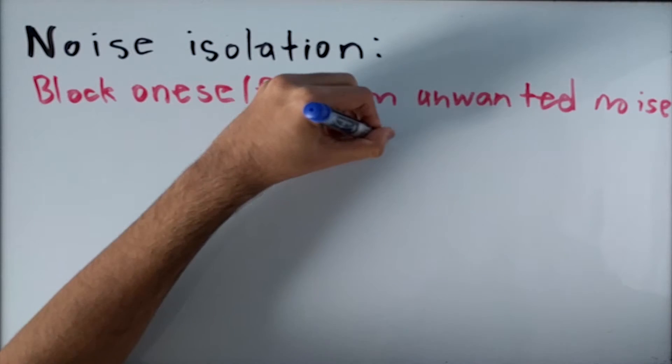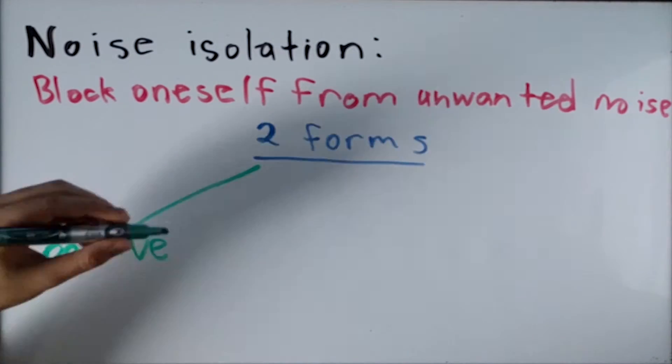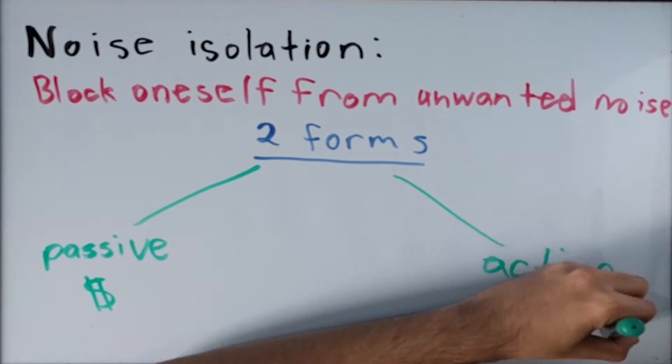There are two forms of noise isolation: passive noise isolation and active noise isolation. The most common form we see is passive noise isolation, so let's discuss that first.